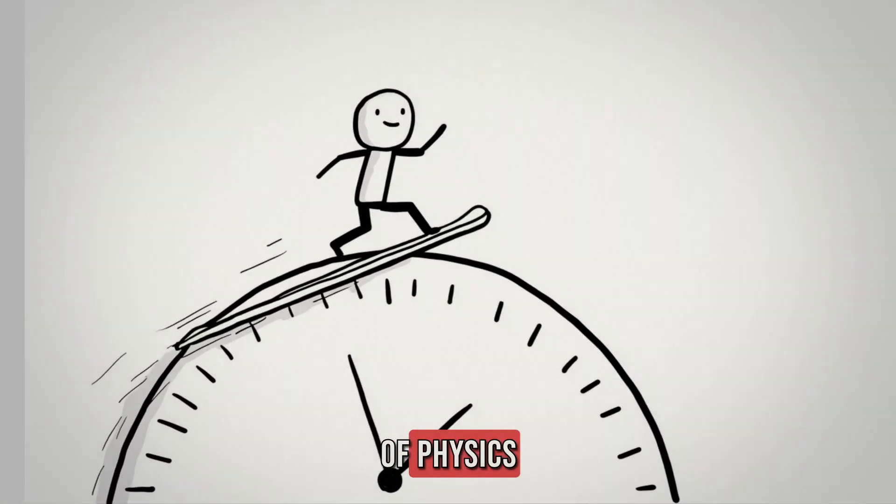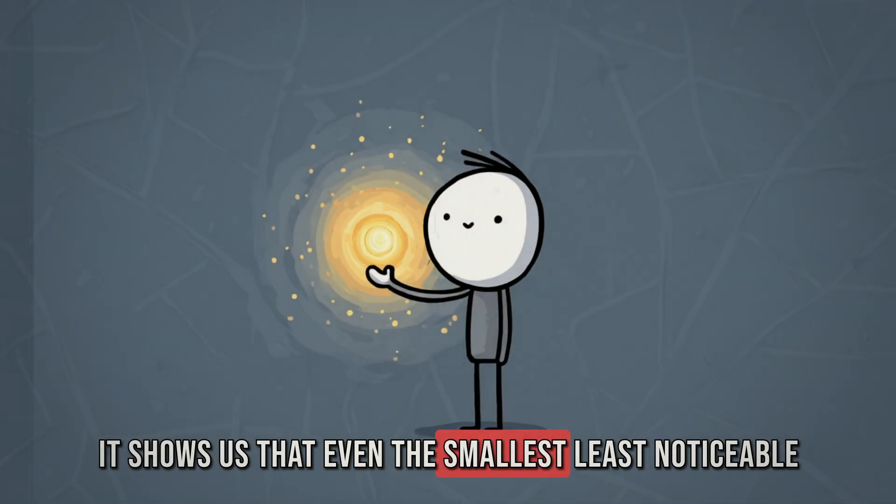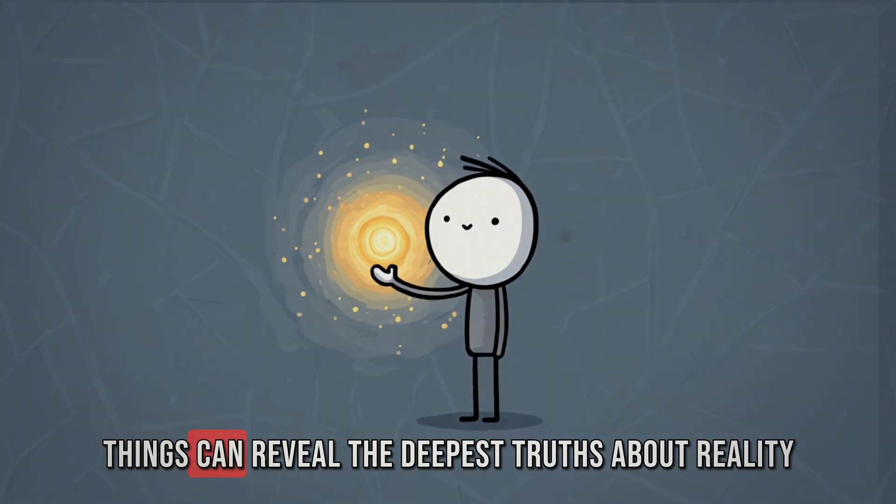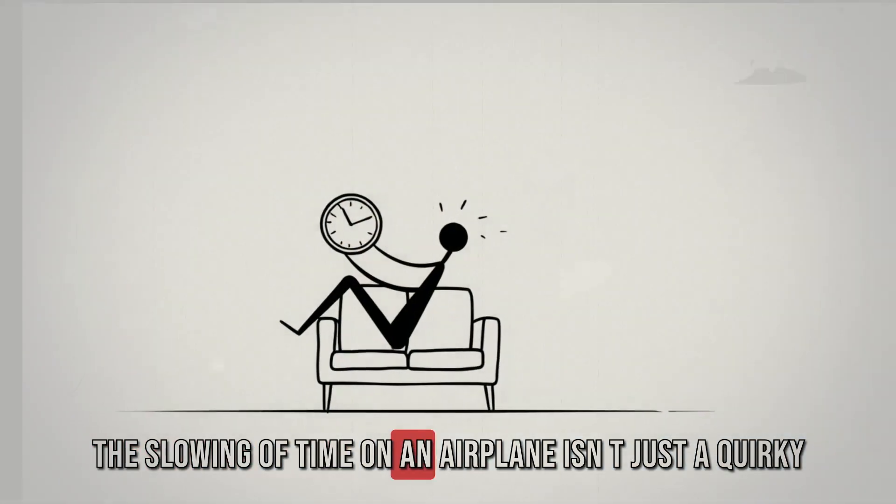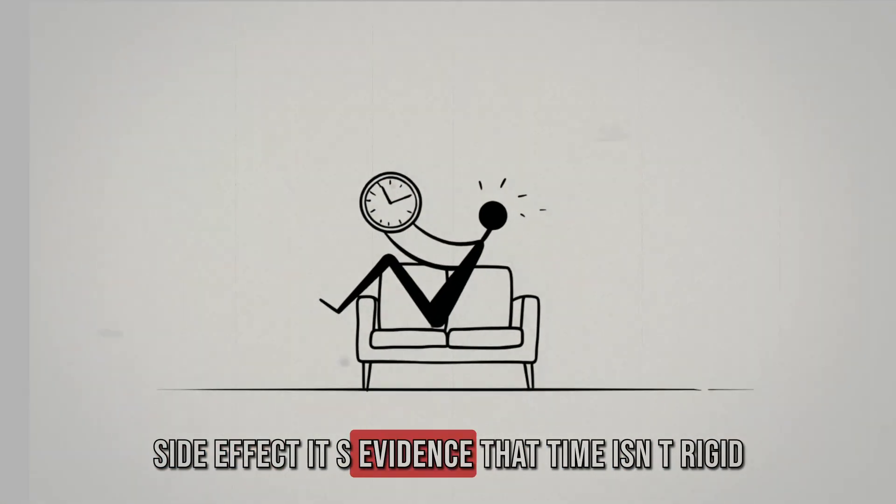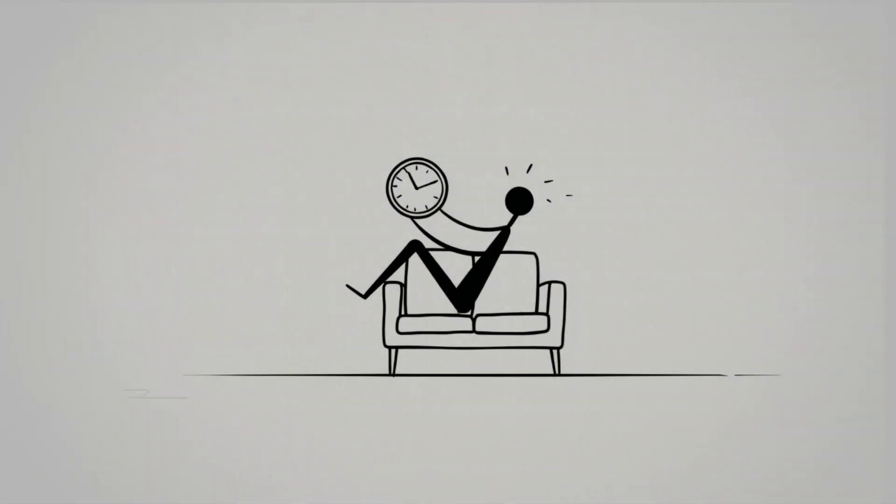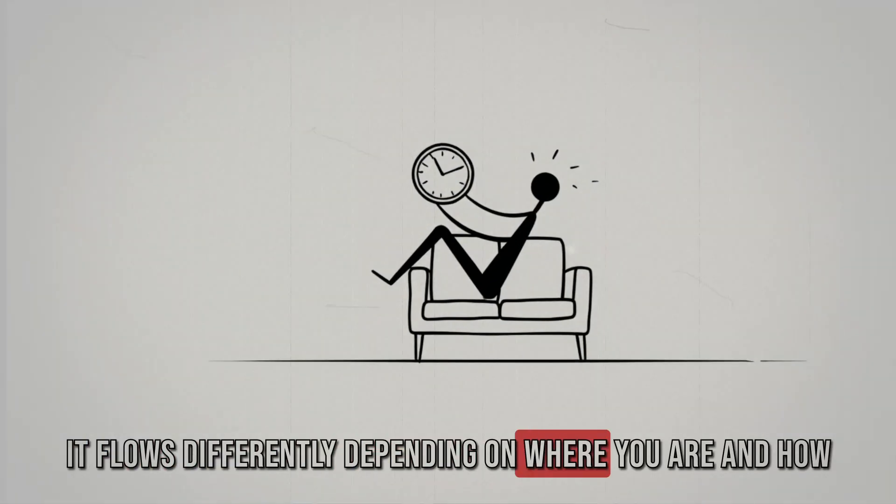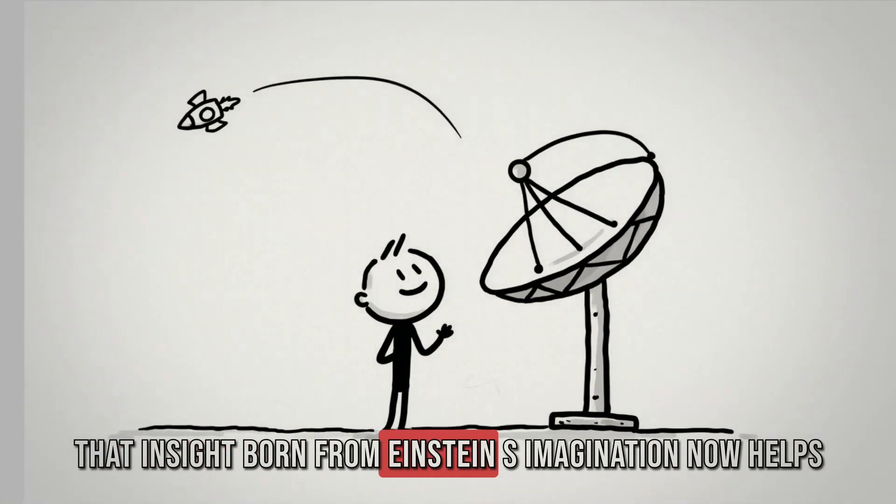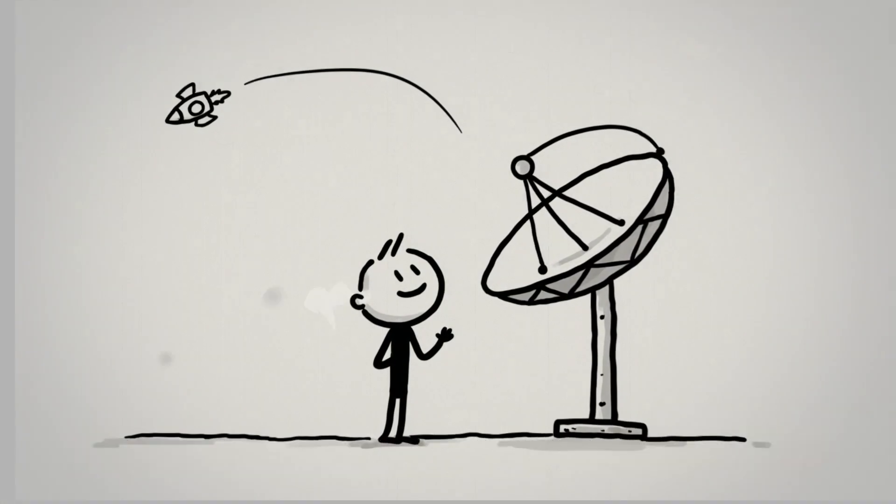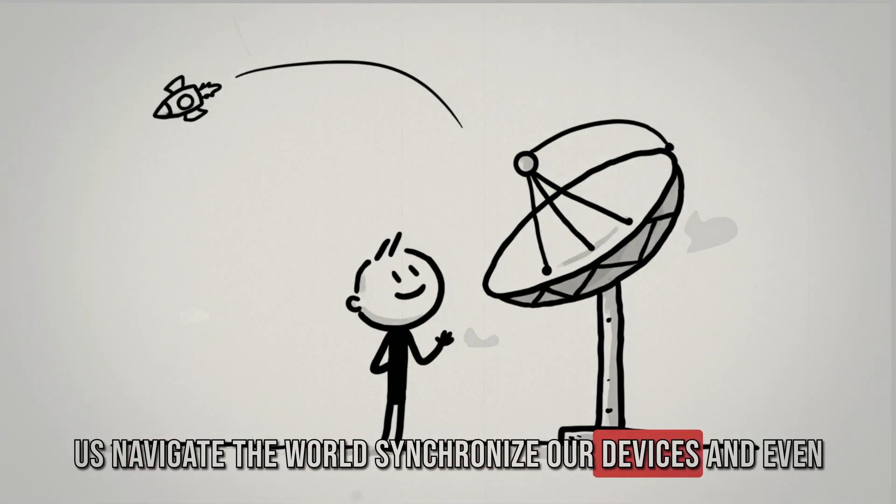And that's the beauty of physics. It shows us that even the smallest, least noticeable things can reveal the deepest truths about reality. The slowing of time on an airplane isn't just a quirky side effect. It's evidence that time isn't rigid. It flows differently depending on where you are and how fast you're going. That insight, born from Einstein's imagination, now helps us navigate the world, synchronize our devices, and even dream of space travel.